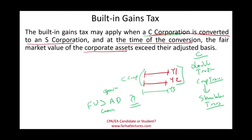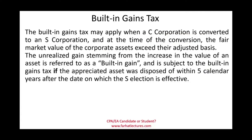What the IRS is trying to avoid is a company converting from a C to an S and then selling those assets, because under an S corporation you are only subject to one tax — the gain flows to the shareholder and they pay taxes once. The unrealized gain stemming from the increase in value of the asset is referred to as built-in gain and is subject to built-in gains tax if the appreciated asset is disposed of within five calendar years from the date of the S election.